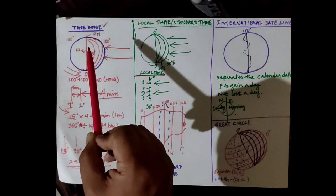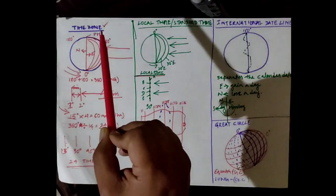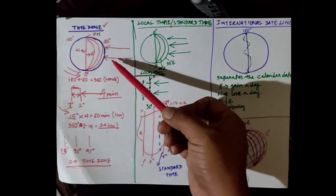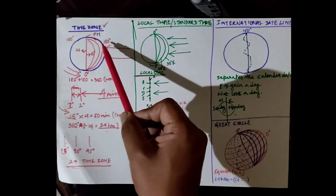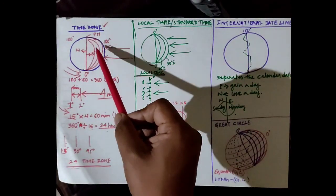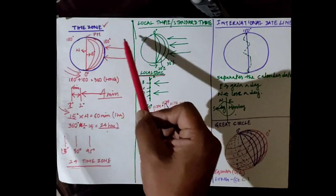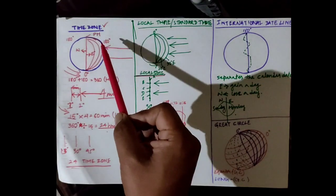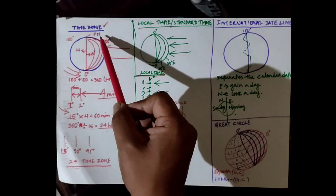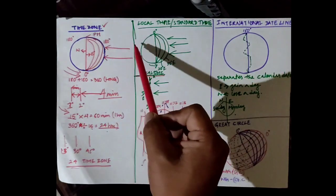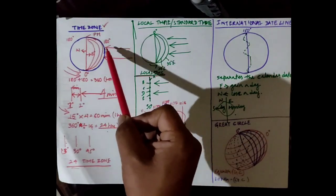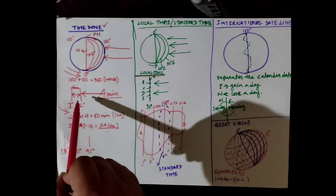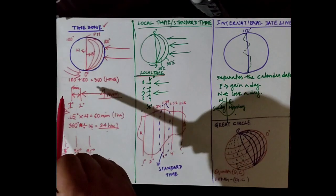Each meridian faces the sun at a different timing. For example, this meridian is currently facing the sun. When the earth rotates from west to east, this meridian moves forward and another meridian comes to that place and starts receiving the direct rays. In this way, each meridian faces the sun at a different timing.